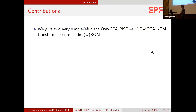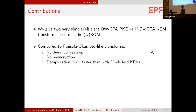Our contribution: we give two very simple and efficient transforms that take a one-way secure public key encryption scheme and output an IND-QCCA KEM. We proved that the first one is secure in the QROM and the second one in the random oracle model only. Compared to Fujisaki-Okamoto-like transforms, there is no de-randomization, which means no re-encryption in decapsulation. That means decapsulation is much faster than with FO-derived KEMs.